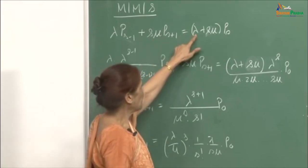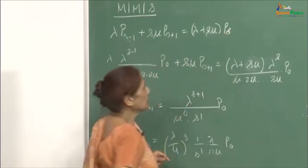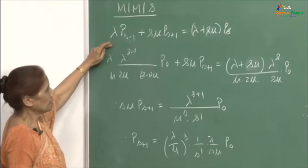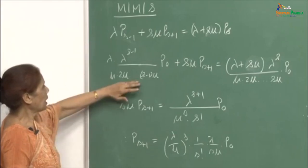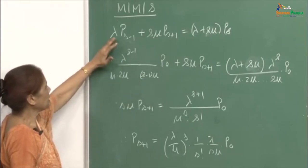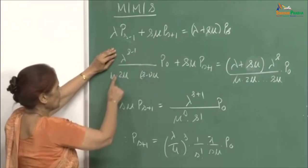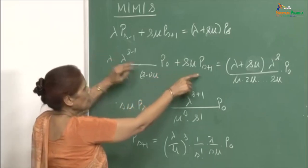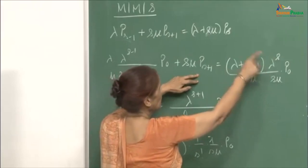Then you will be back to p_S. Here it will be one arrival and one departure, so you remain at p_S. Therefore, this is the balanced equation at this stage. We can now substitute: the formula for p_S up to p_{S-1} in terms of p_0. This will be λ into λ^{S-1} upon μ·2μ···(S-1)μ. Then plus S·μ·p_{S+1} and λ + S·μ into λ^S.